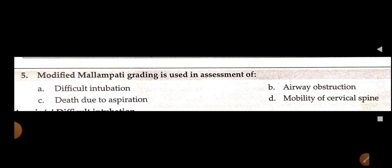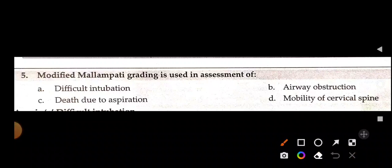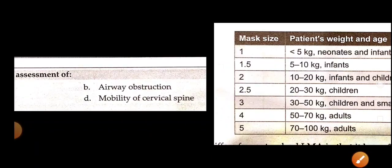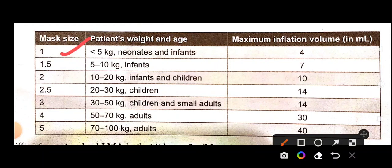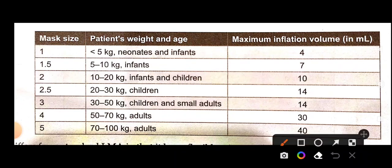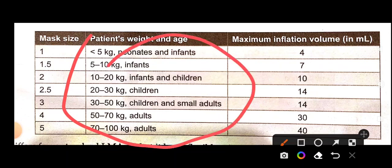Modified Mallampati grading is used in assessment of — options: difficult intubation, airway obstruction, death due to aspiration, or mobility of cervical spine. The best answer is difficult intubation. Modified Mallampati grading is for predicting difficult intubation. This table is very important — learn it by heart.